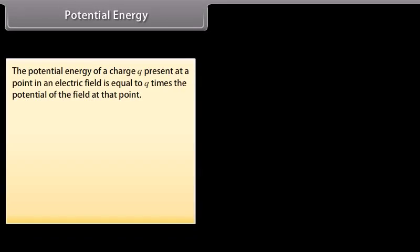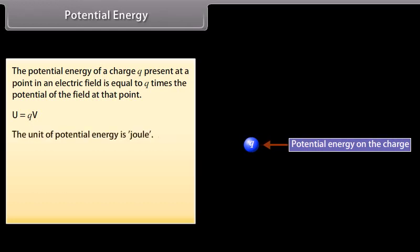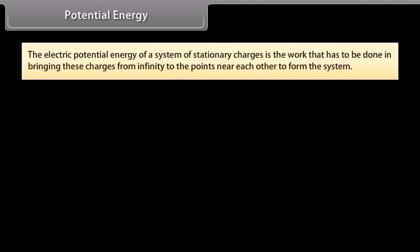The potential energy of a charge Q present at a point in an electric field is equal to Q times the potential of the field at that point: U equals QV. The unit of potential energy is joule. Bringing any charge Q from infinity to a point A in an electric field requires work W_A to be done on the charge, which is stored as its potential energy: U_A equals QV_A. The electric potential energy of a system of stationary charges is the work that has to be done in bringing these charges from infinity to the points near each other to form the system.